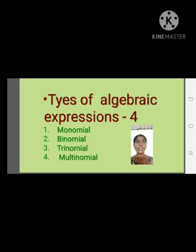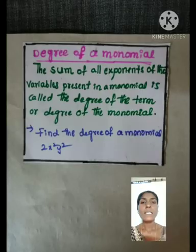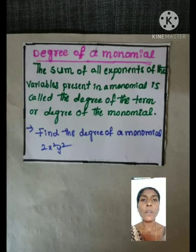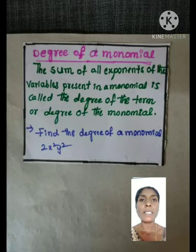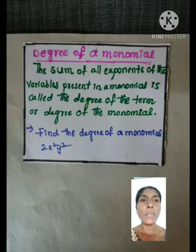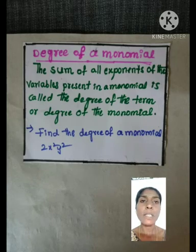So now today we are discussing about the Degree of Algebraic Expression. Before discussing that, let us understand what we mean by the Degree of a Monomial. The Degree of a Monomial is defined as the sum of all exponents of the variables present in a monomial, and is called the Degree of the Term or Degree of the Monomial.